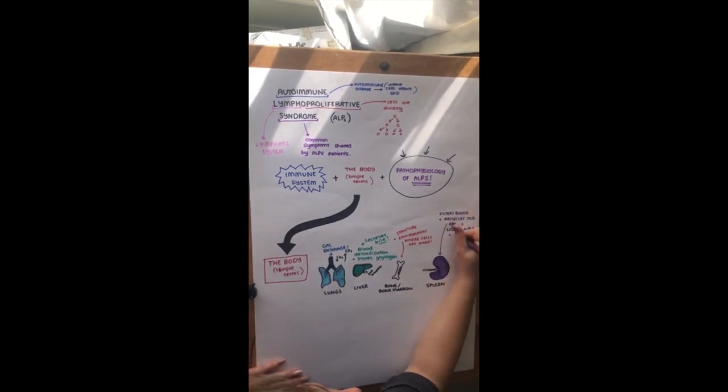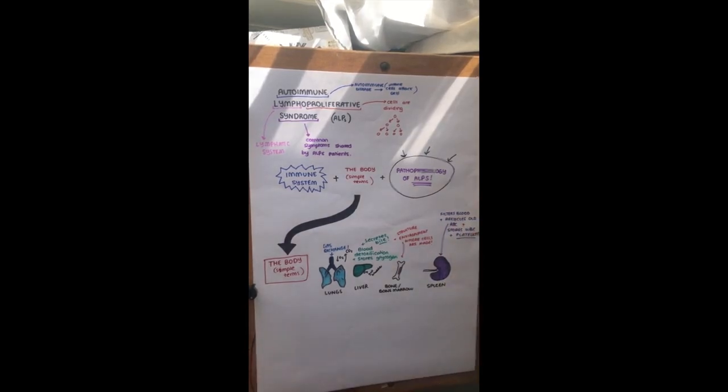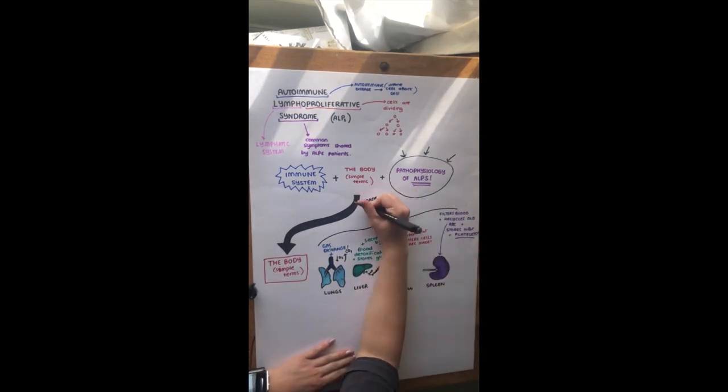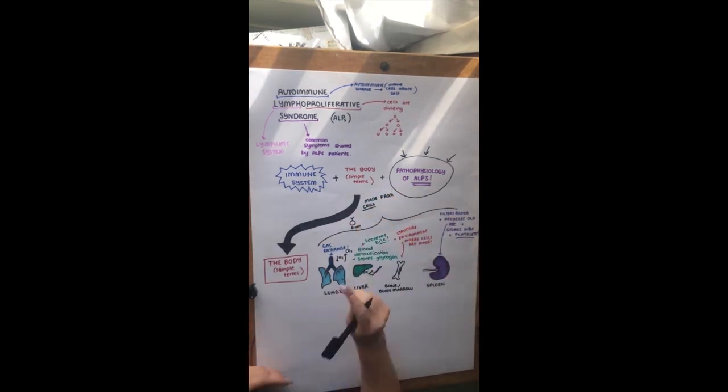So all of these organs are made from cells. So all these little cells, I'm just going to draw a few examples. So I've got a B cell, I've got a red blood cell. All these cells will make up the organ and that's why they're really important.